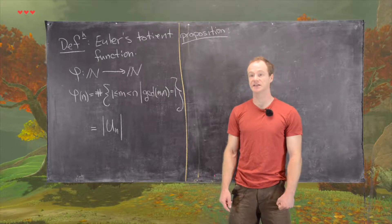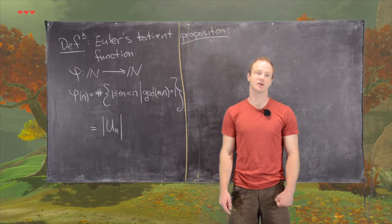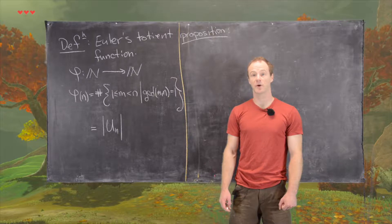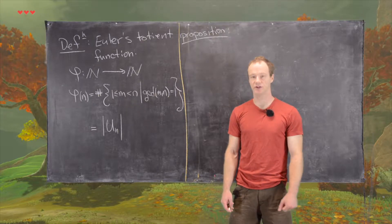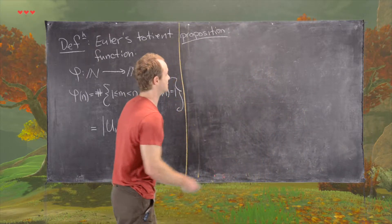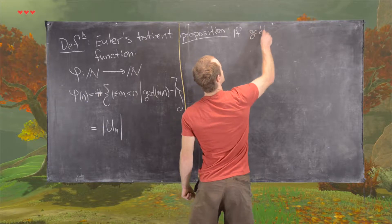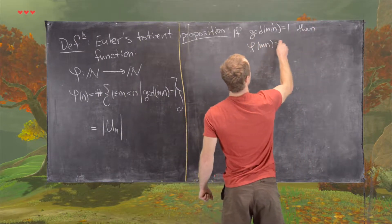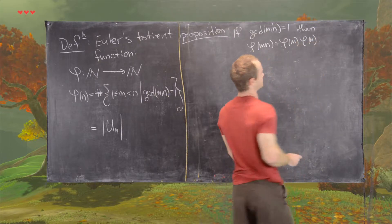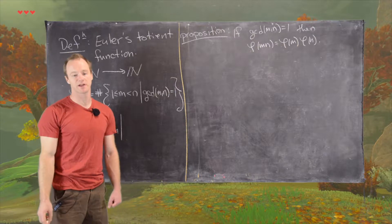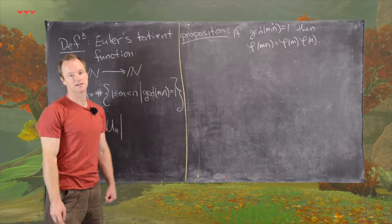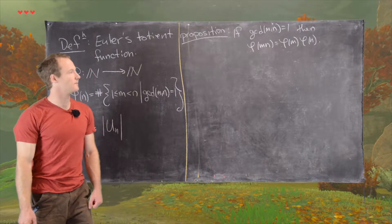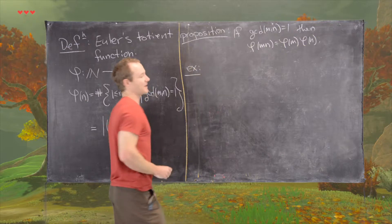We're working towards a nice closed formula for Euler's totient function on a number n, and we need one more result to get there. We've already looked at the value of phi of a prime and a power of a prime in previous videos. Now we'll look at the following proposition: if gcd(m, n) = 1, then phi(mn) = phi(m) times phi(n). In other words, the phi function has this multiplicative property given relatively prime natural numbers — without that condition, this fails.